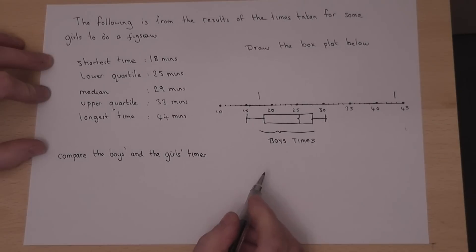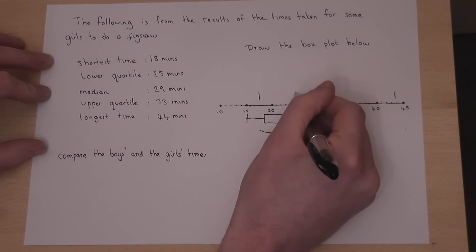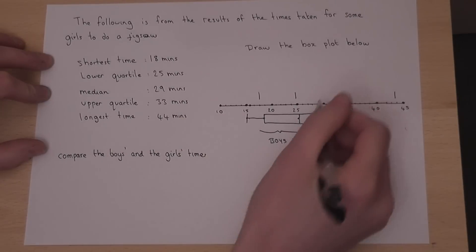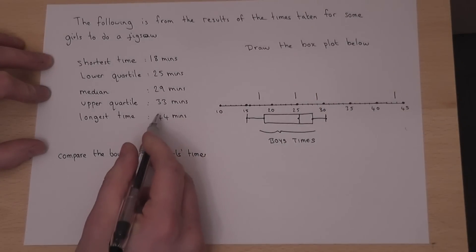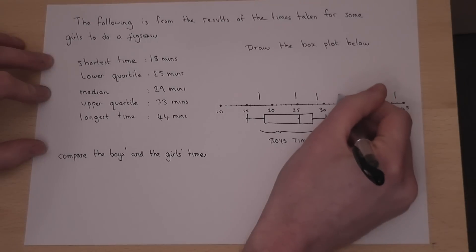I also put a line at the lower quartile, which is 25 minutes, one more at the median of 29 minutes, and another one at the upper quartile, which is 33 minutes.